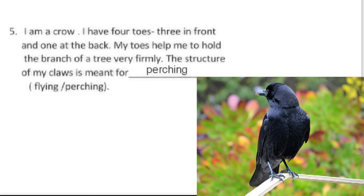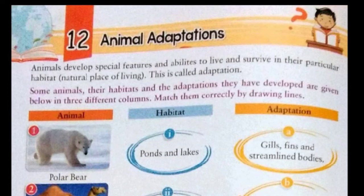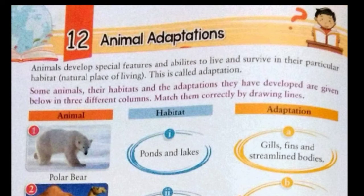So like this we have completed our exercise number 11. Now we will move to our exercise number 12, that is animal adaptations. Animals develop special features and abilities to live and survive in their particular habitat, that is natural place of living. This is called adaptation. Here on this page some animals, their habitats, and the adaptations they have developed are given in three different columns. We have to match them correctly by drawing lines.